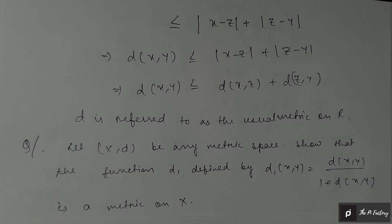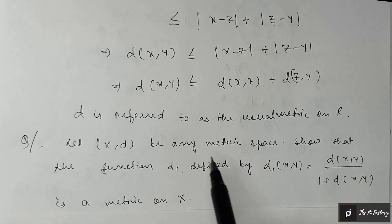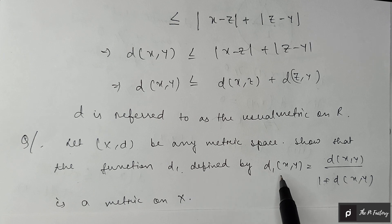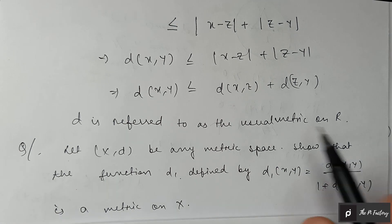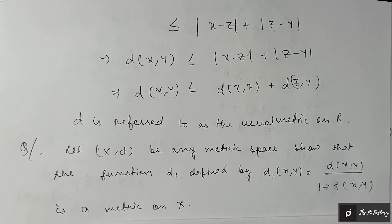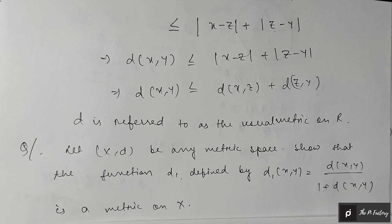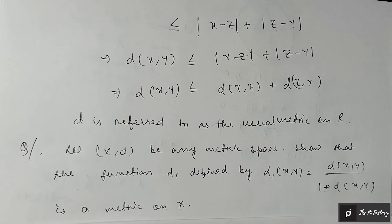Another example: let (X, d) be any metric space. Show that the function d₁ defined by d₁(x, y) = d(x, y) / (1 + d(x, y)) is also a metric on X. It is given that (X, d) is a metric space.